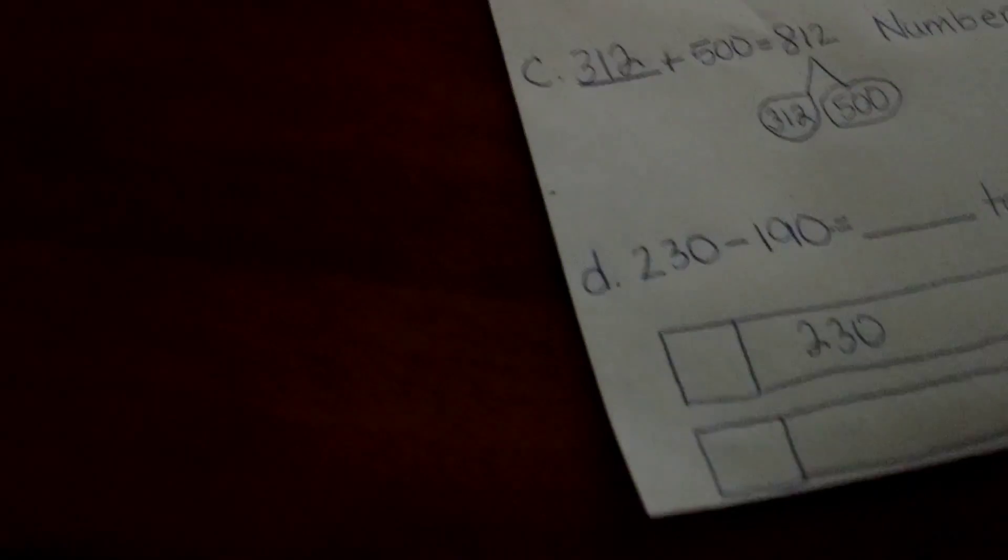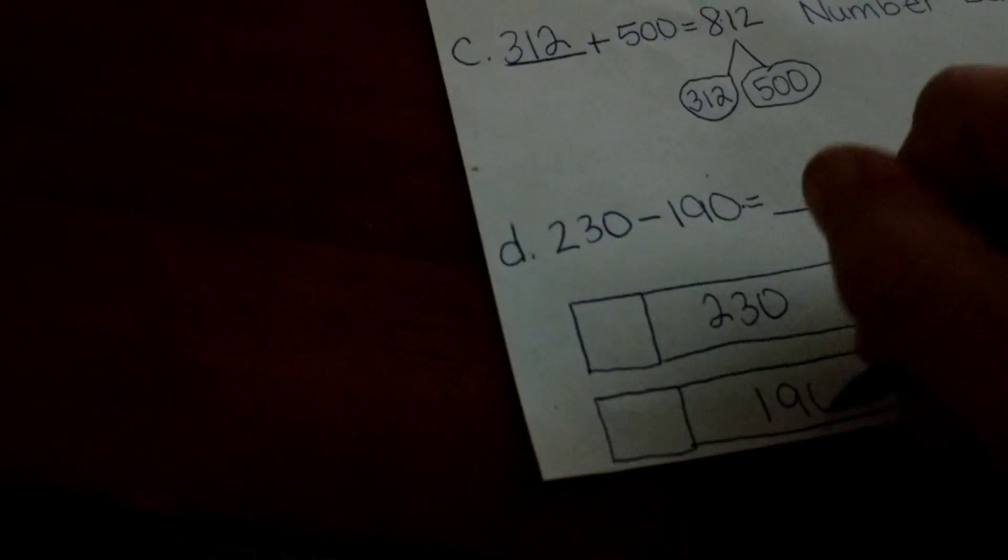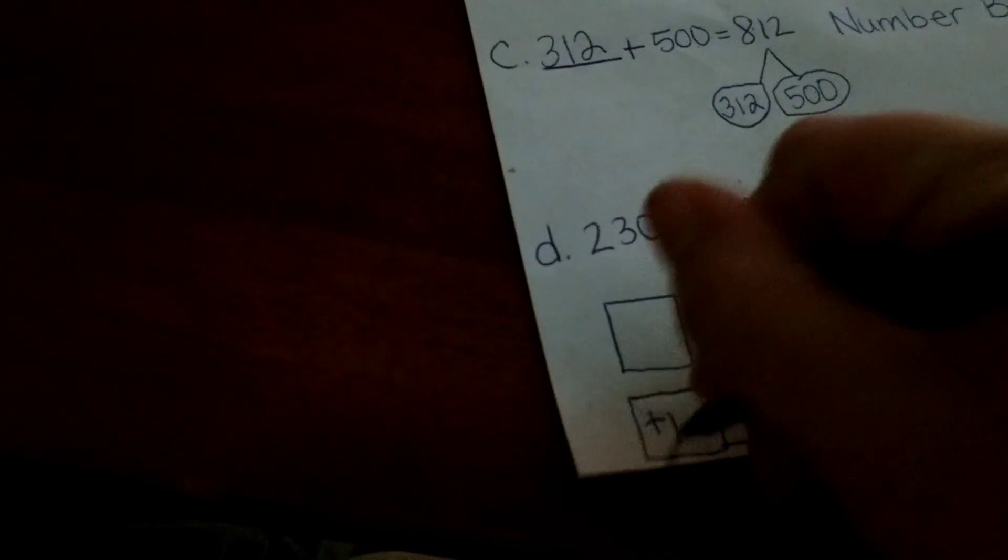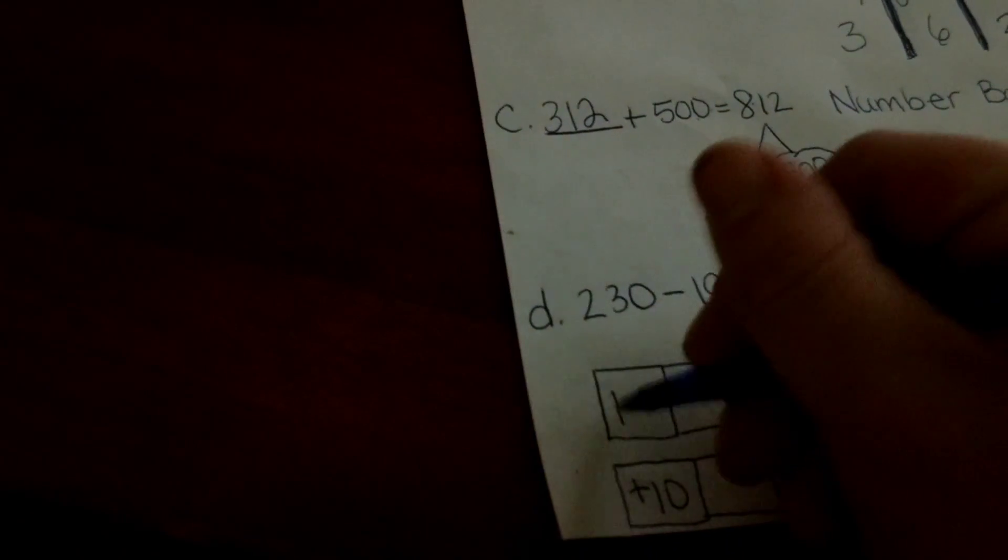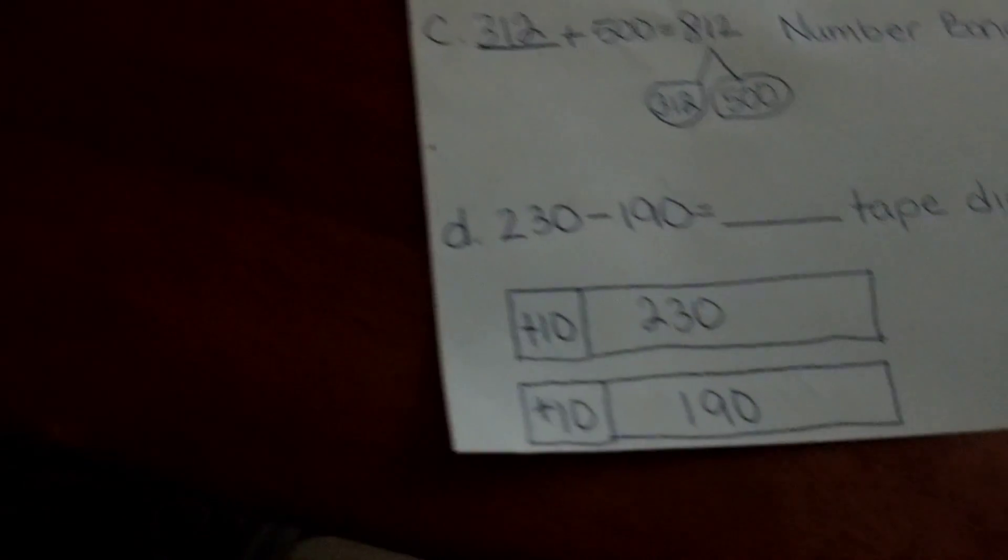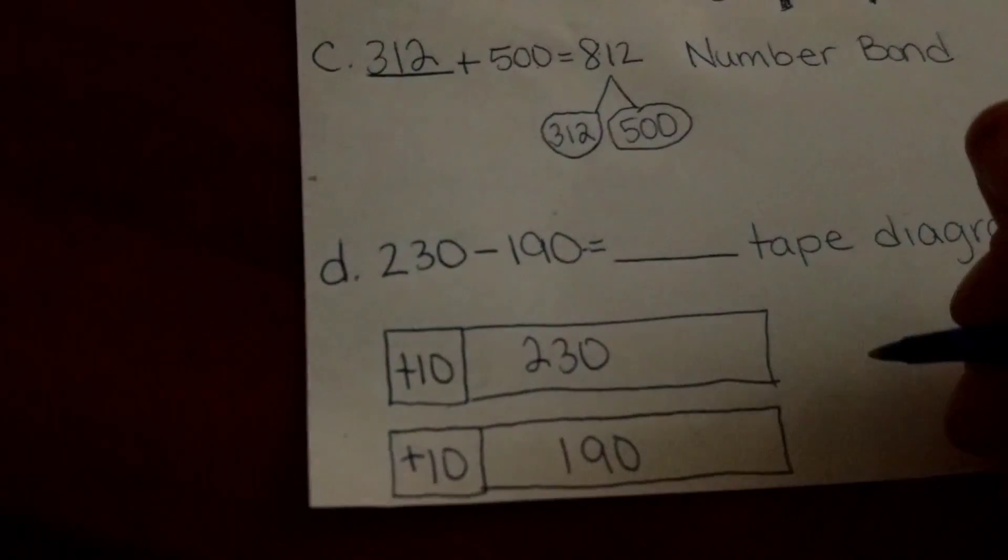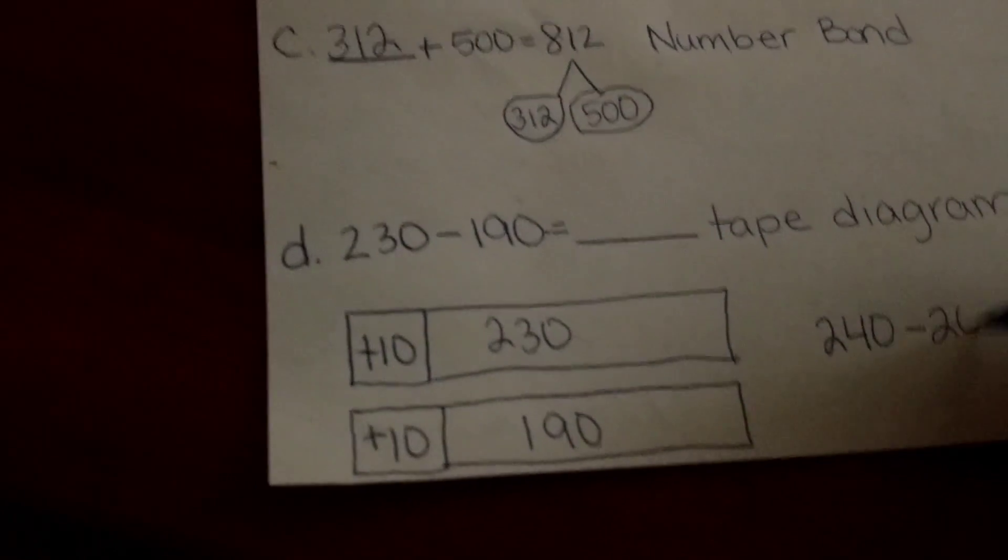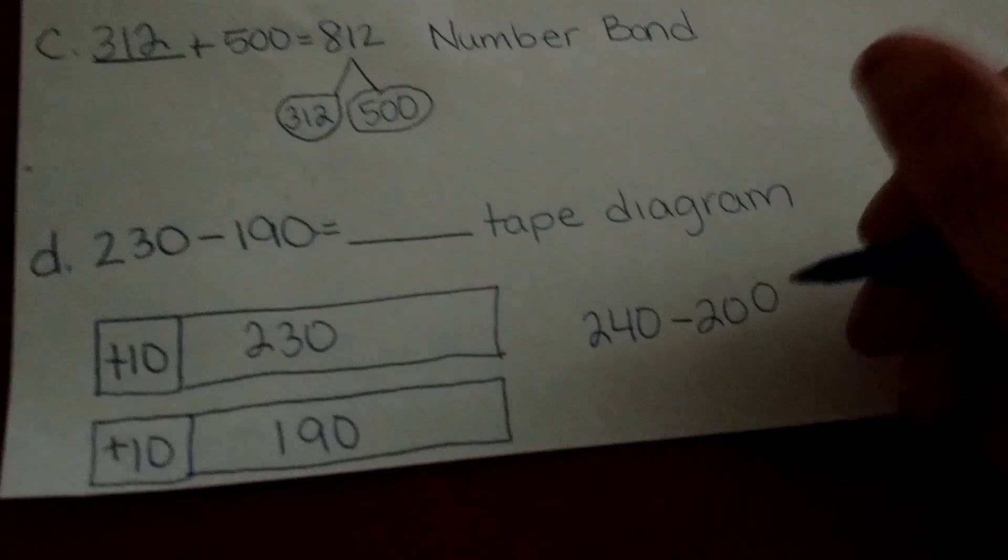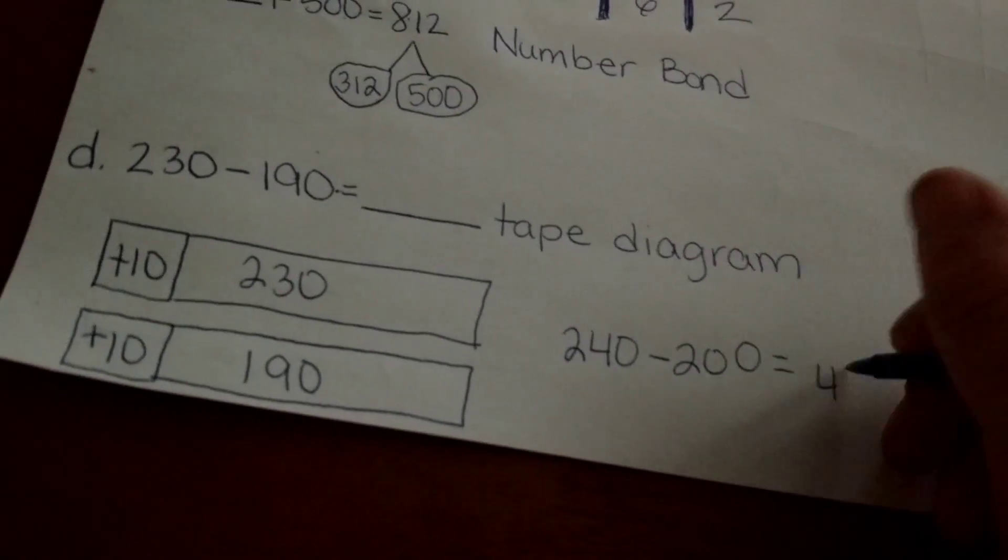For us to get 190 to a friendly number, we want to add 10 to that. But whatever we do to one addend, we have to do to the other. So that means we have to add 10 to 230. Our new problem will be 240 minus 200, which equals 40.